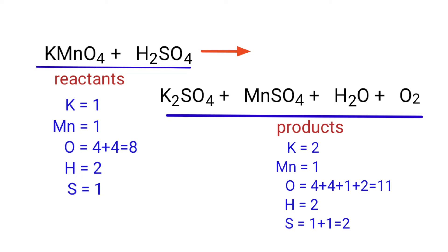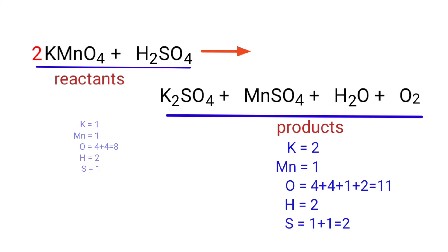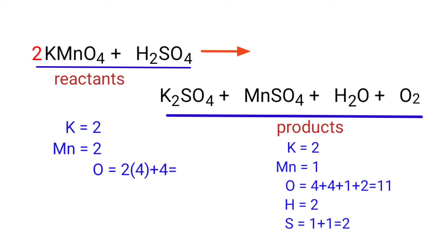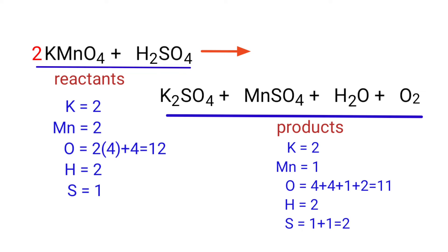In this equation we need to balance the Potassium atoms first. To do this we need to put a coefficient of 2 in front of KMnO4. The Potassium atoms are balanced. Now we need to balance the Manganese atoms — to do this we need to put a coefficient of 2 in front of MnSO4.